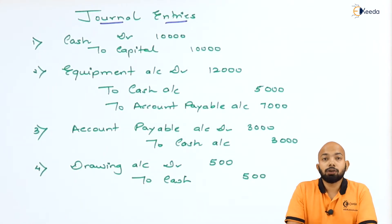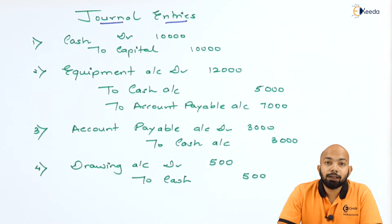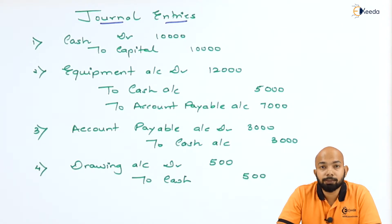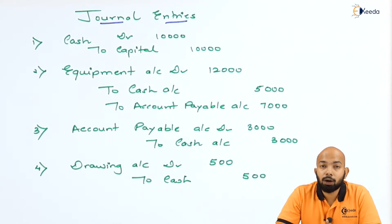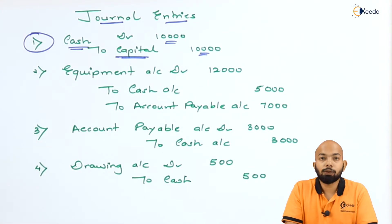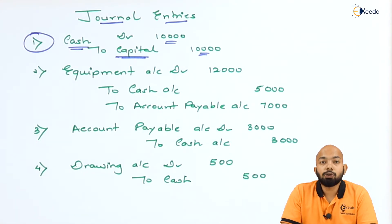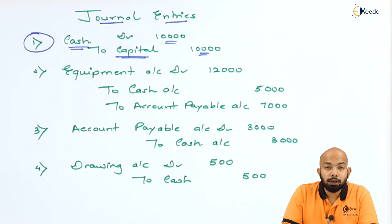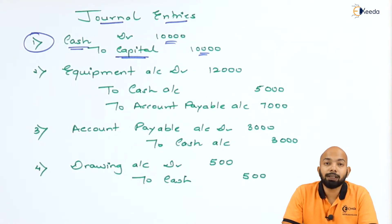The first transaction refers to investment in business — ₹10,000 cash. Here, capital is created. Capital always has a credit balance, so the capital account will be credited. Since cash is coming in for the business, the entry is: Cash Account debit to Capital Account ₹10,000.